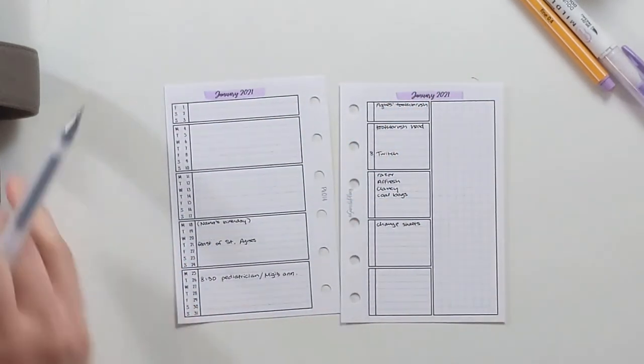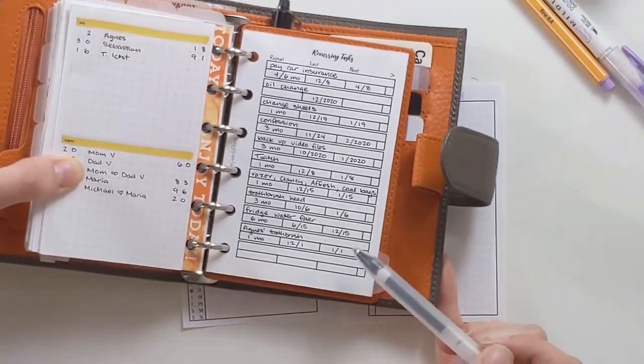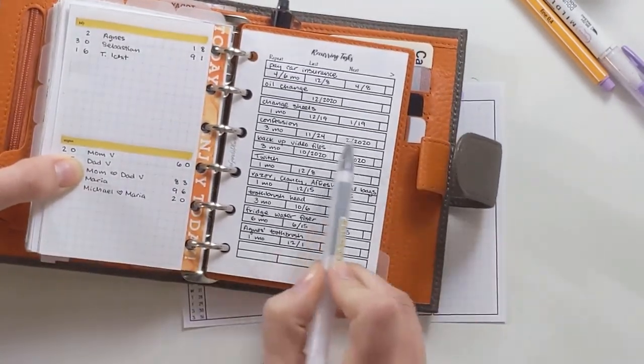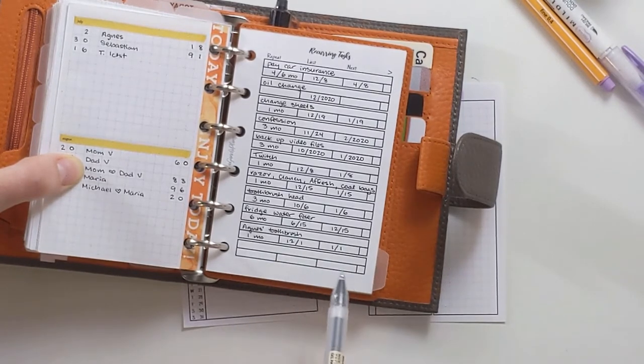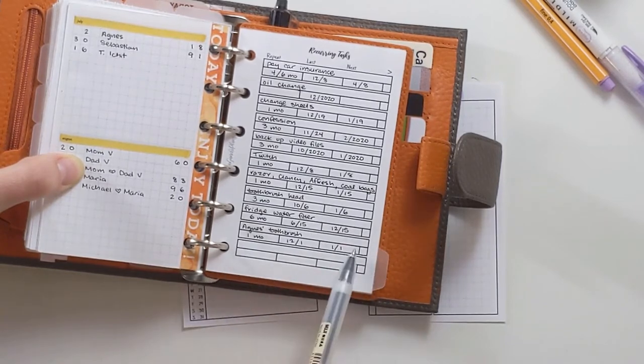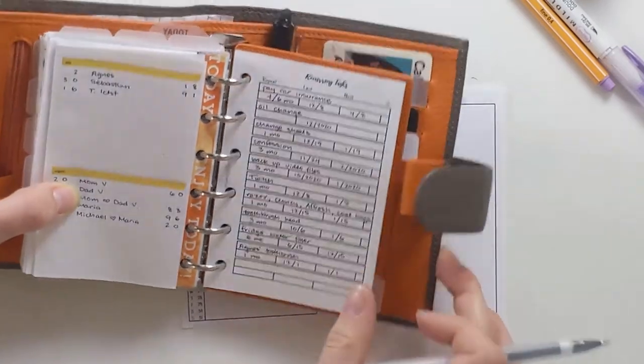And so whenever these things happen, I'll go back here probably once a month or so, and I will then say, okay, the last time I changed your toothbrush was actually January 1st. So the next time is February 1st. And I'll put a mark here saying that this column is no longer active or current and it's a different row, if that makes sense.